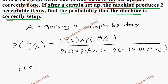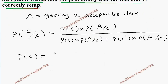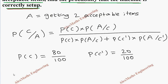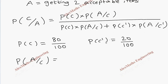Now let's write all the values. From past experience, 80% of the setups are correctly done, so P of C is 80 by 100, and P of C dash is 20 by 100. In the numerator we also have P of A given C — that is, when correctly set up, getting two acceptable items. The machine produces 90% acceptable items, so for each item the probability is 90 by 100. For two acceptable items, we write 90 by 100 into 90 by 100.